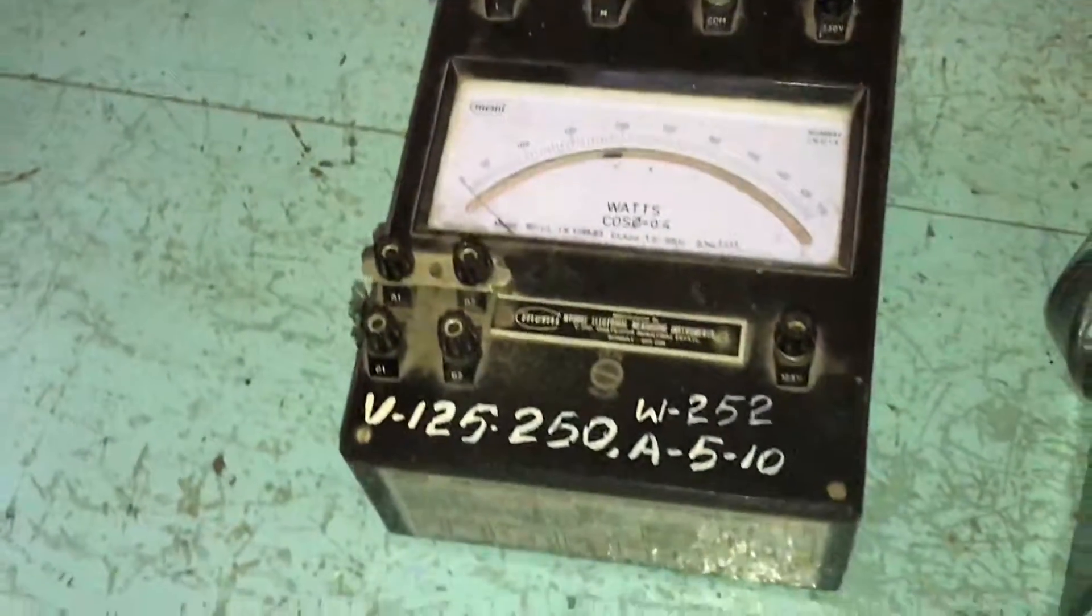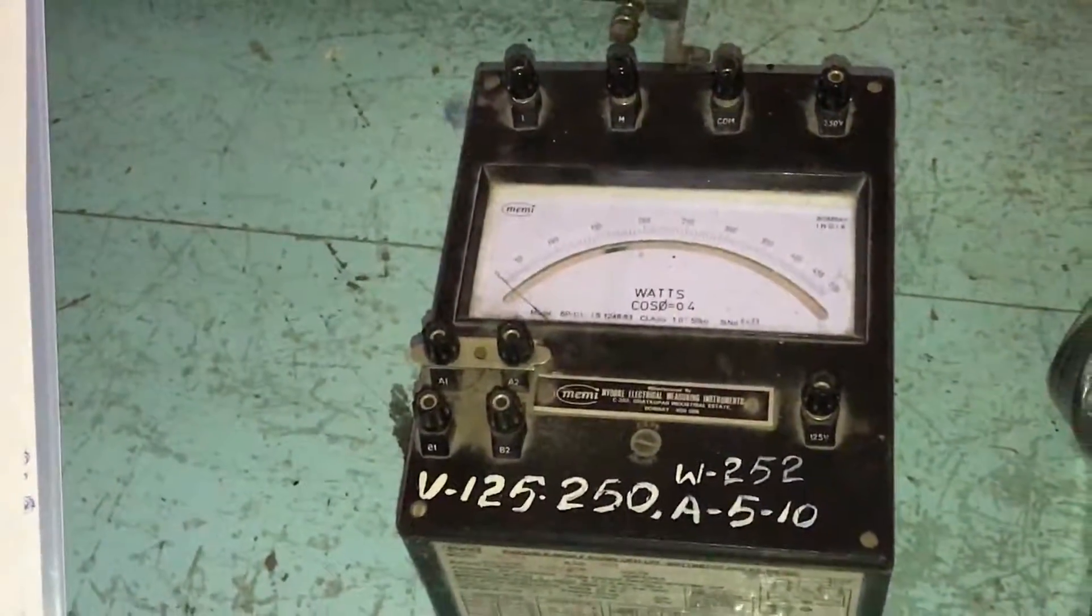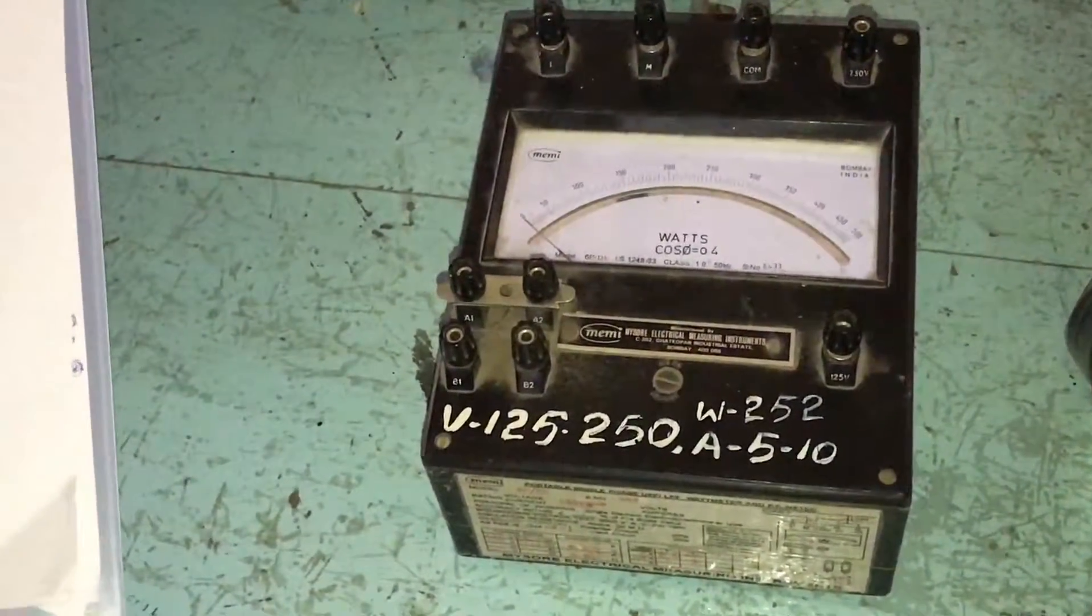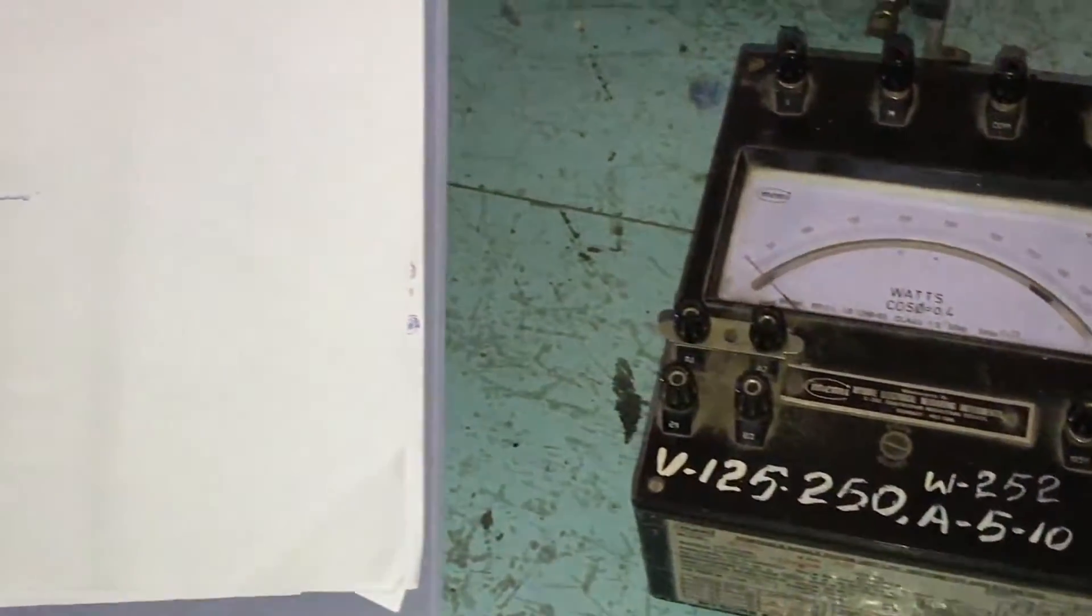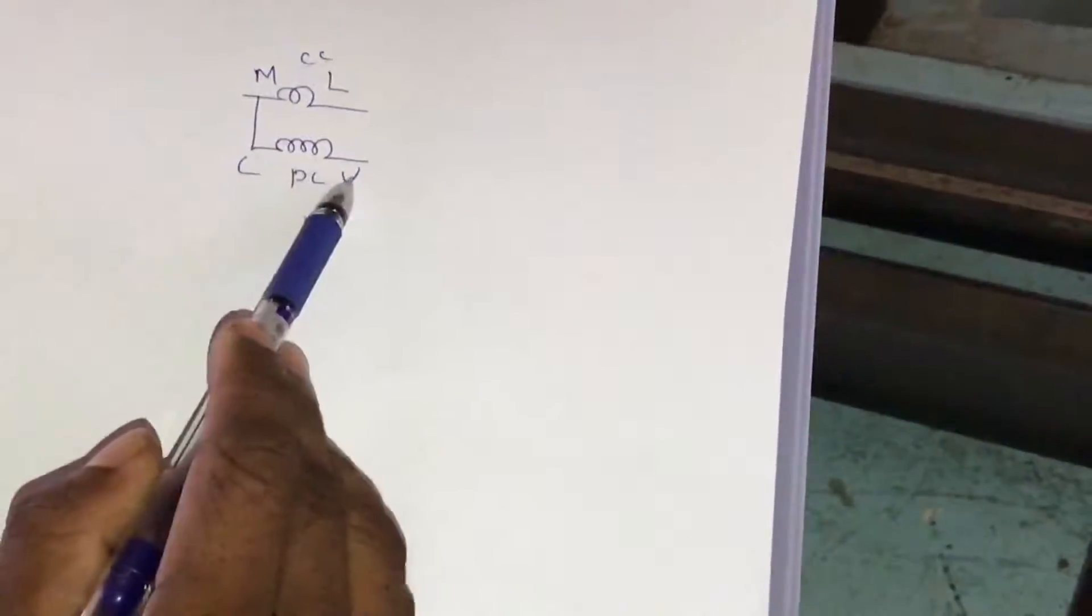This is the wattmeter which is used to measure power of the circuit. It has two coils: current coil and pressure coil. The current coil is always connected in series to the circuit and the pressure coil is connected in parallel.